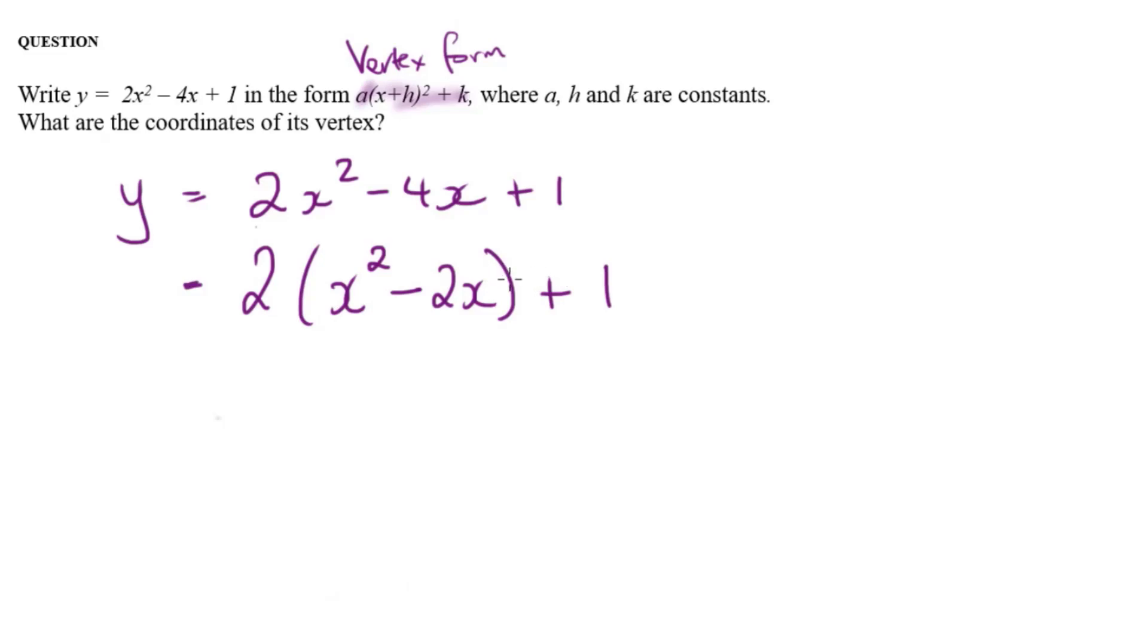Now, what number can I add to x squared minus 2x to make it a perfect square? Well, it would be half the coefficient of x. So that's half of minus 2, which is minus 1, and then all squared. So that means the term I'm putting in here is minus 1 squared.